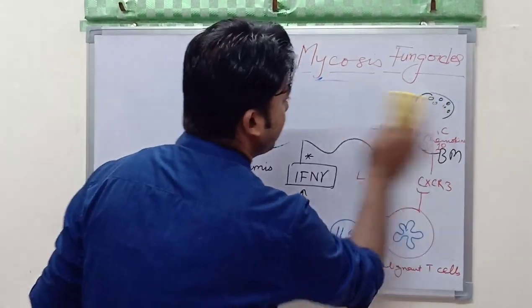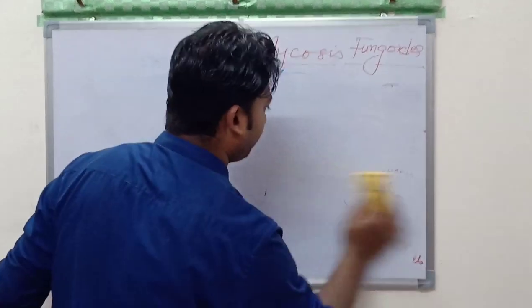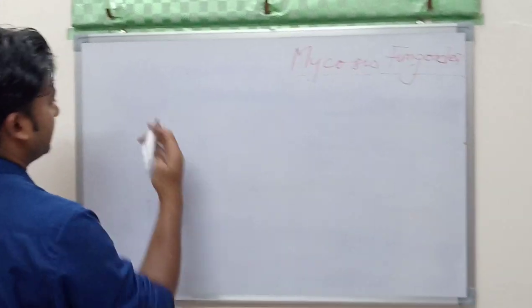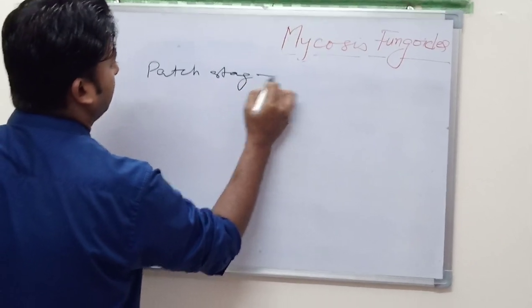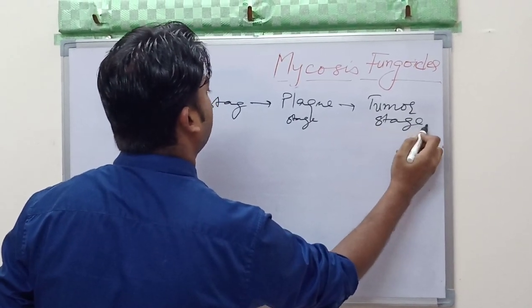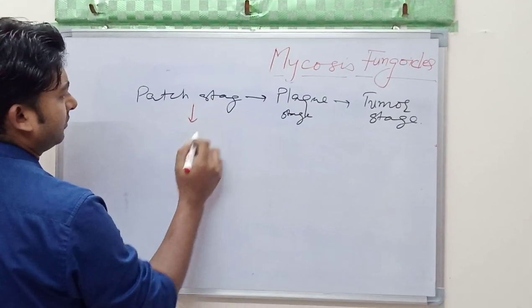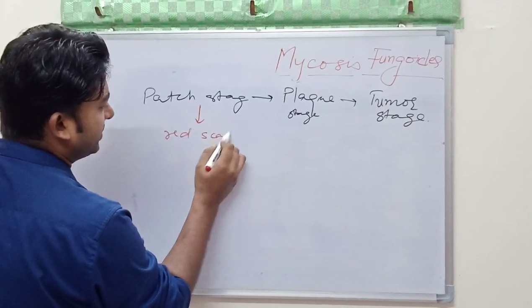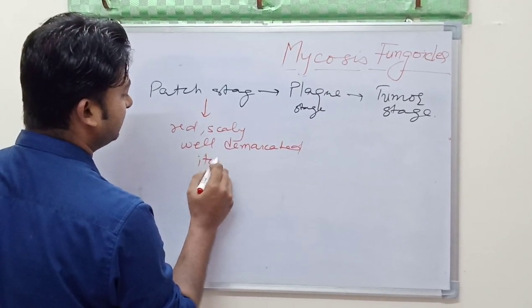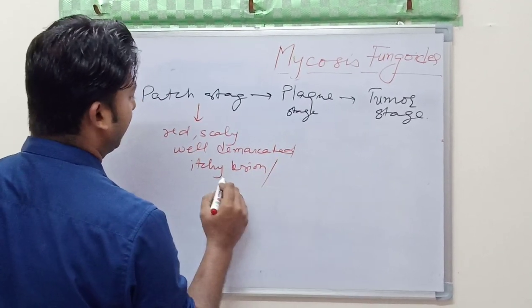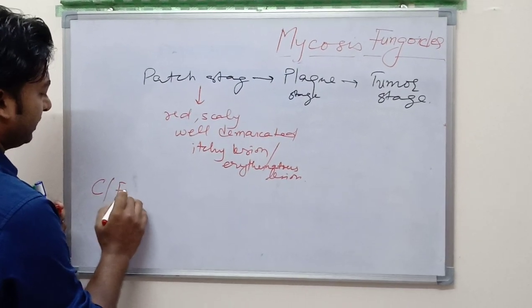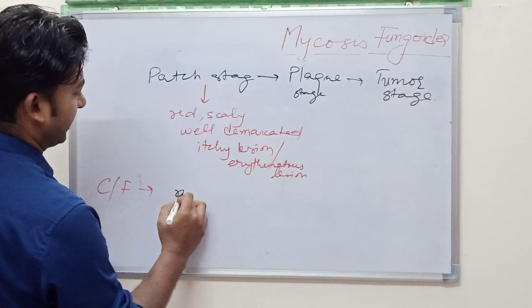Now the patch stage: here we get red, scaly, well demarcated, itchy lesion or sometimes erythematous lesion. So the clinical presentation or clinical feature would be like patient will present with rash or pruritus.